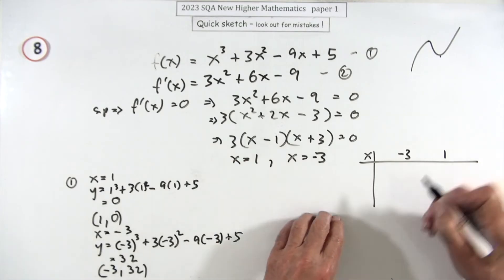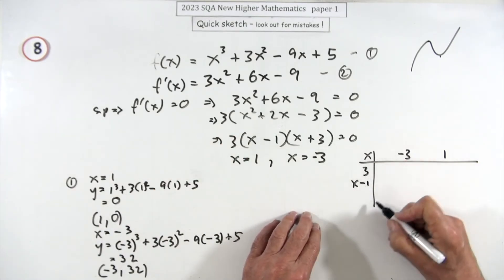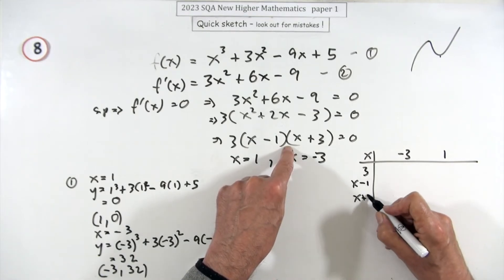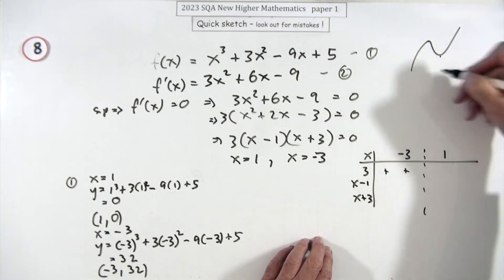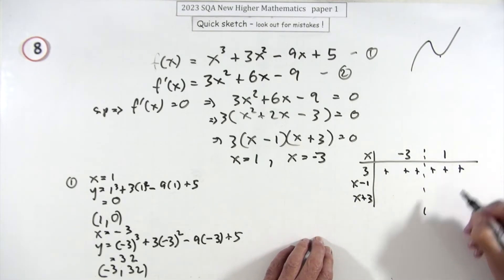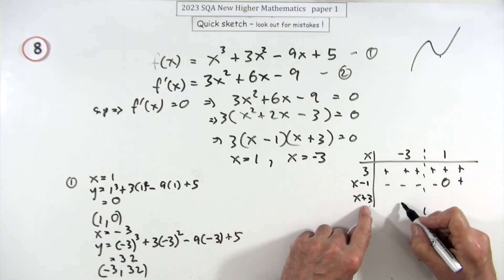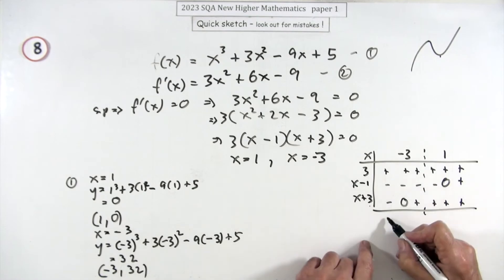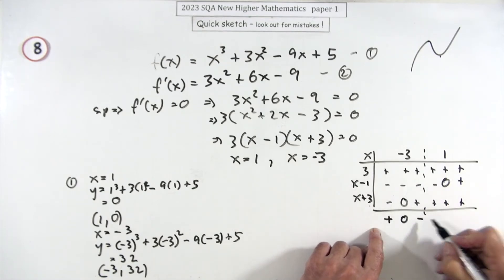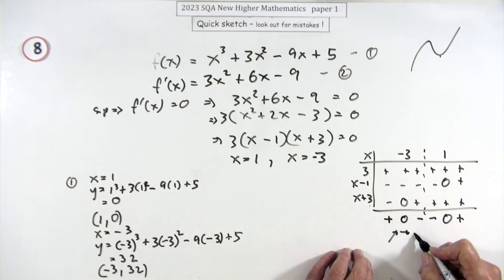But now you've got to demonstrate their nature, so you need a nature table. Something happens at negative 3, something happens at 1. I'm going to use the good old table of signs. The dy/dx derivative will be the product of those three factors. When x is one, that'll be zero; if x is bigger than one, it'll be positive; if it's less than one, it'll be negative. If x is negative three, it'll be zero. When you multiply them all together, you've got positive, zero, negative, another negative, zero, positive. So this is maximum, minimum.